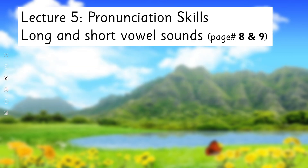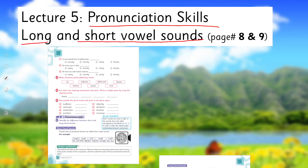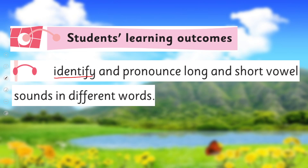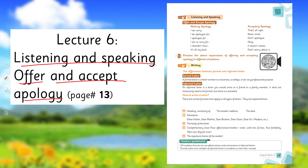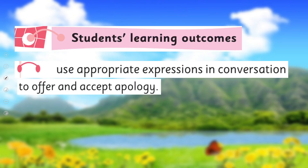Lecture 5, under the title of Pronunciation Skill, covers long and short vowel sounds on pages 8 and 9. The SLO is to identify and pronounce long and short vowel sounds in different words. Lecture 6, under Listening and Speaking, covers how to offer and accept an apology on page 13, with the SLO to use appropriate expressions in conversation.